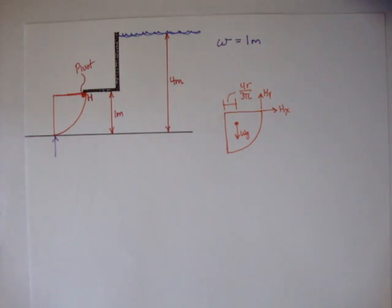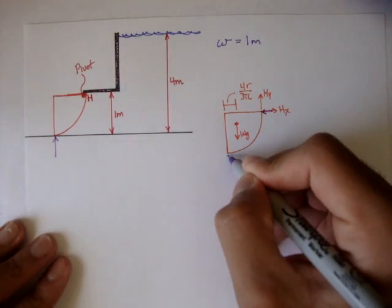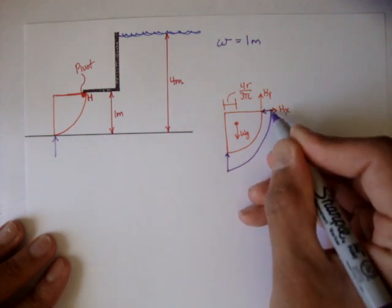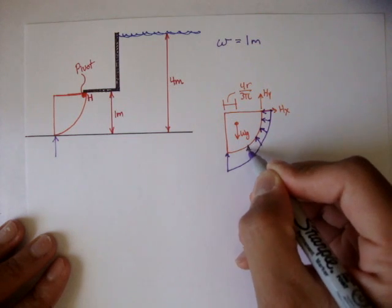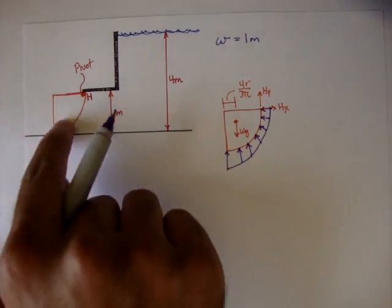This water is pushing against this gate. I'll draw the pressure distribution in purple. So the pressure distribution looks something like this. It's way bigger at the bottom, so it kind of tapers small. That's the pressure distribution of just the gate.